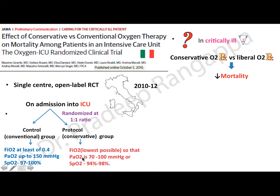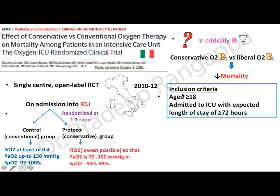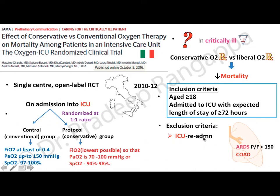Exclusion criteria included ARDS with P/F ratio less than 150, COPD patients, ICU readmissions, end-of-life patients, and neutropenic patients. The primary outcome was ICU mortality. Secondary outcomes were new organ failures and new infections.